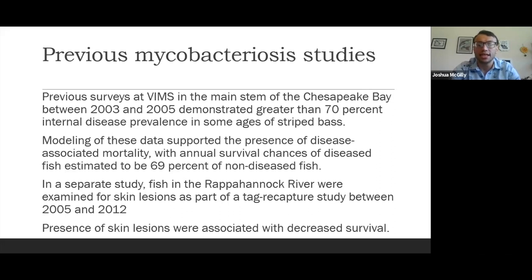The second study looked at skin lesions and broke disease into three separate severity categories: mild, moderate, and severe. It showed that as disease increased in severity, relative survival of the fish did decrease.